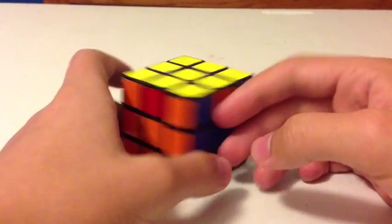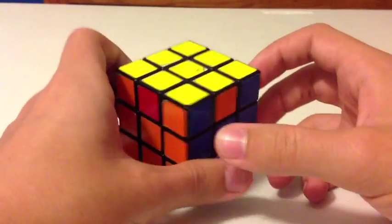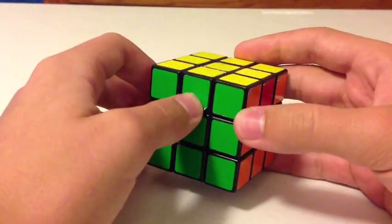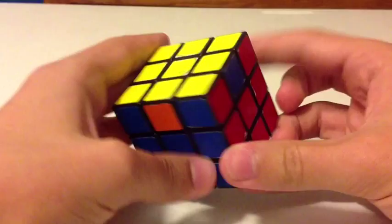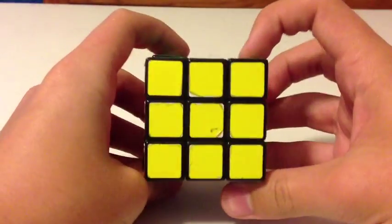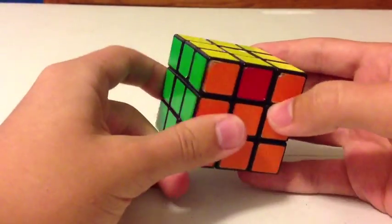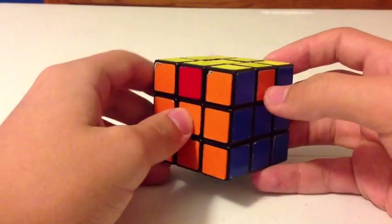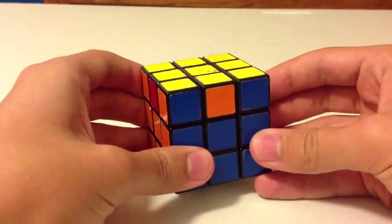Again, there are only two cases for this step. You'll either see that one edge is solved while the rest aren't, or none of them are solved. And then the obvious case where all edges are solved and you have a solved Rubik's Cube.